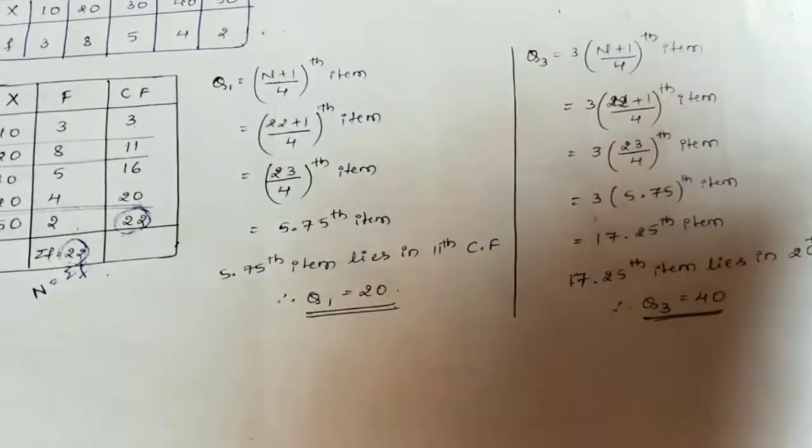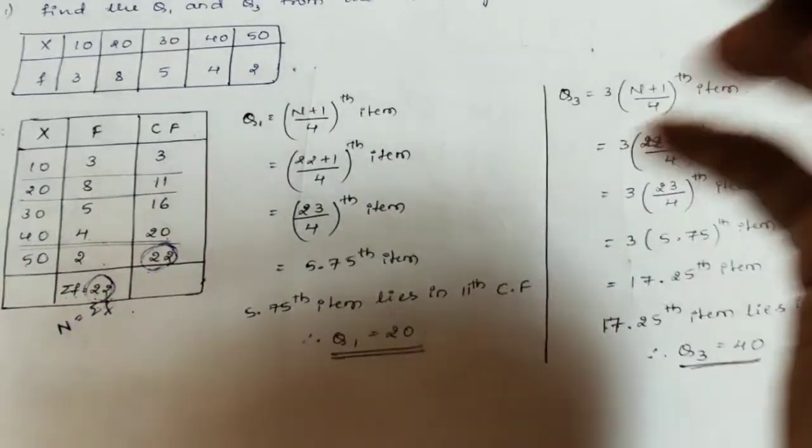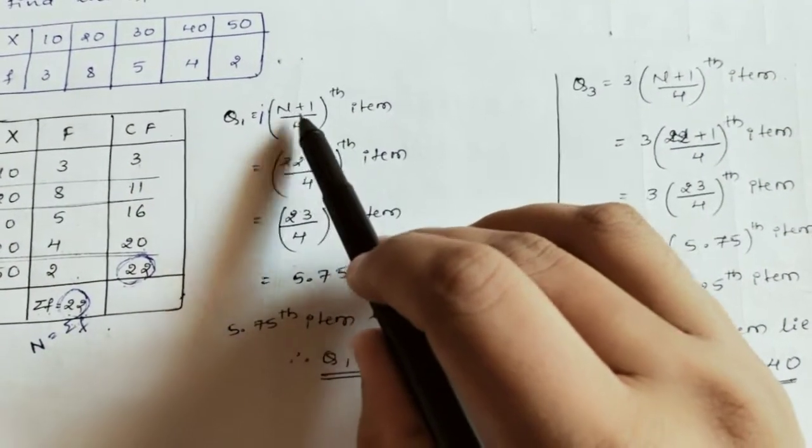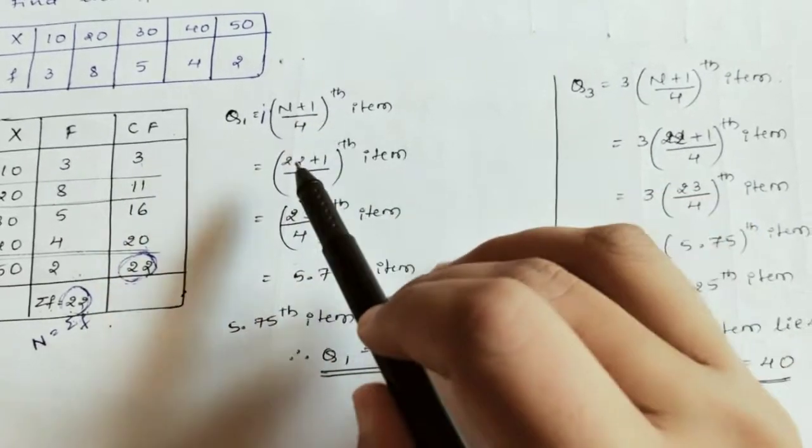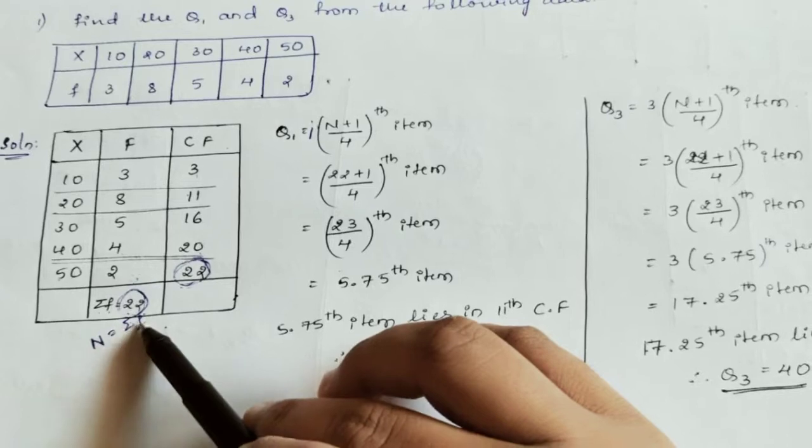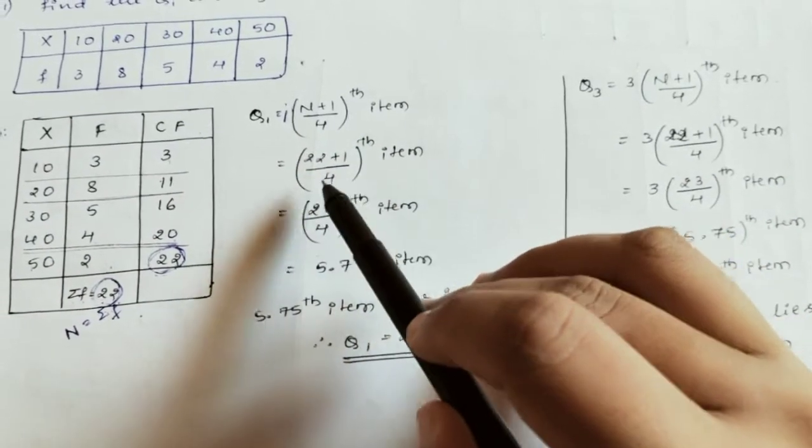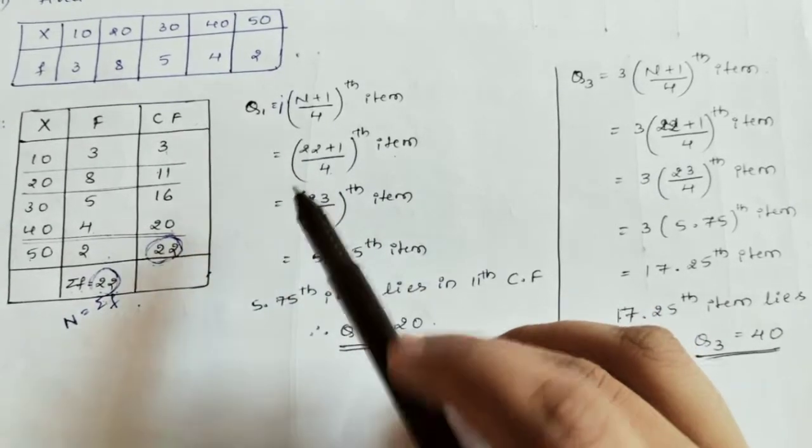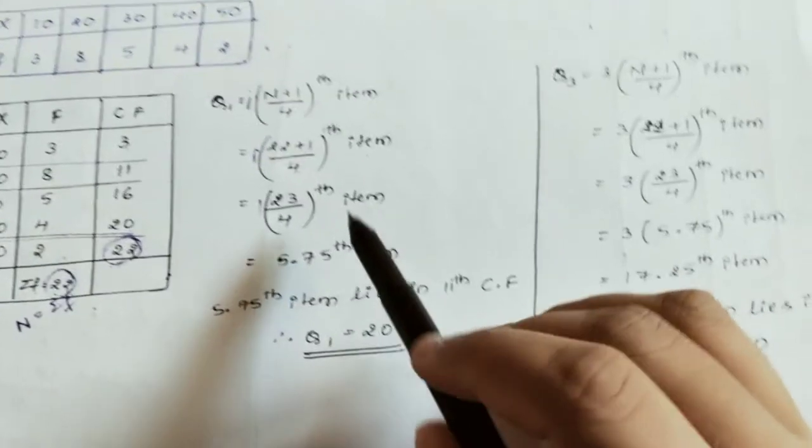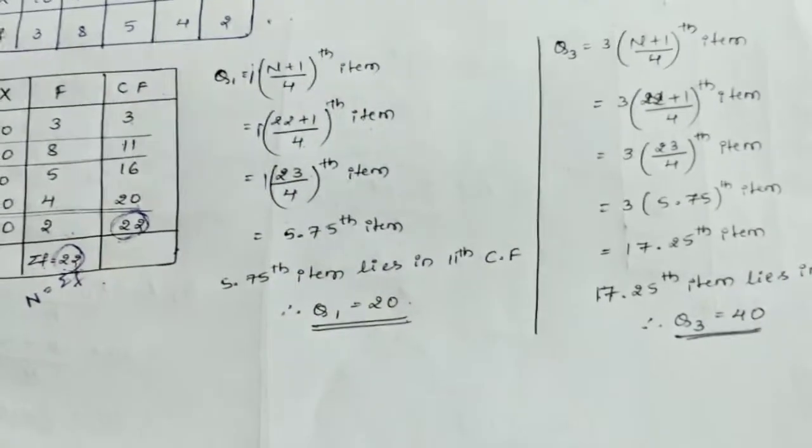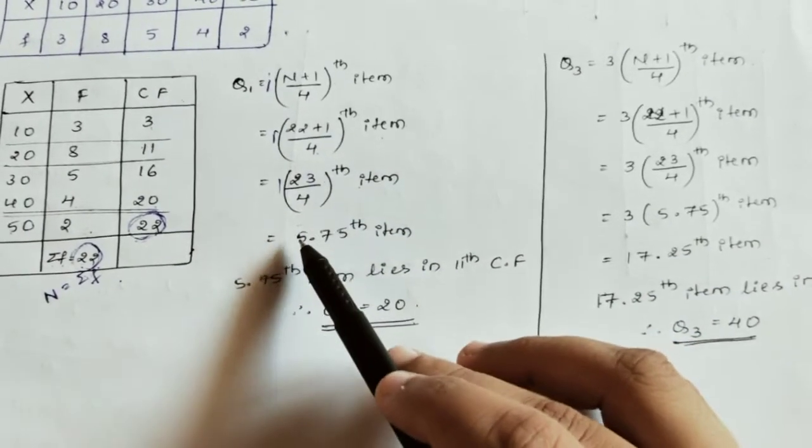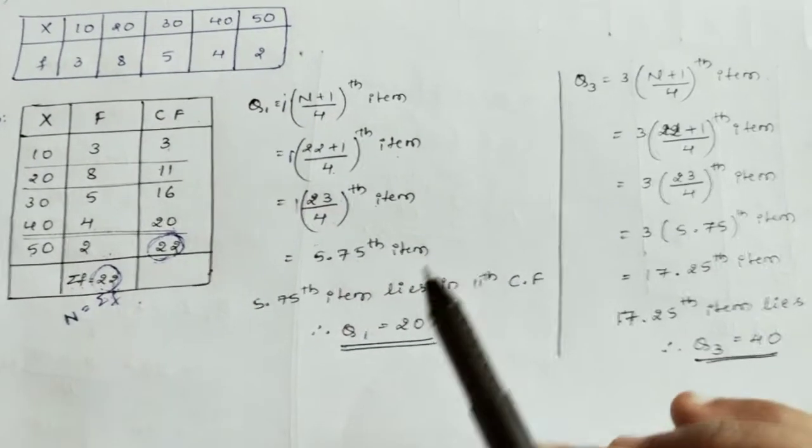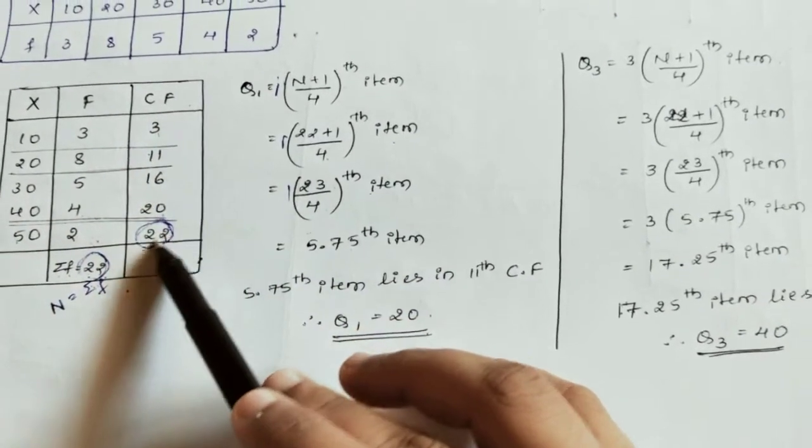Now we use the formula to find Q1. Q1 equals 1 into n plus 1 divided by 4th item. The value of n is the summation of F, which is 22. So 22 plus 1 divided by 4th item equals 23 divided by 4, which gives us 5.75th item.